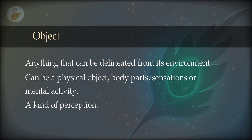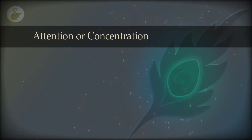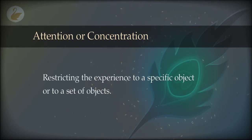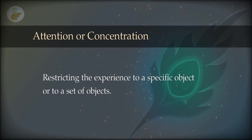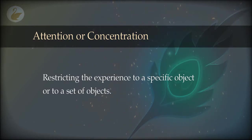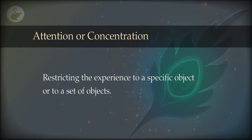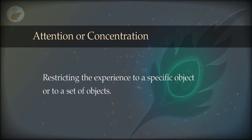An object is nothing but a specific experience. So now we can define attention as restricting the experience to a specific object or a set of objects. You can include more objects in the experience and this is also called concentration. When you concentrate on a specific object or set of objects, a particular name and form, then this ability is called attention.